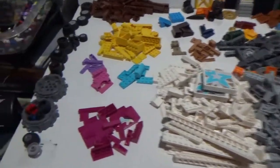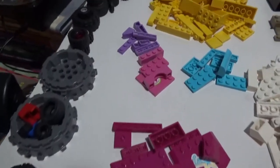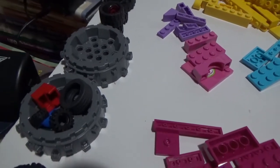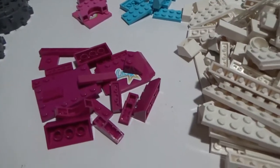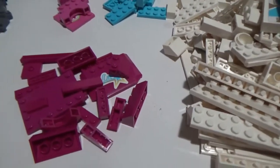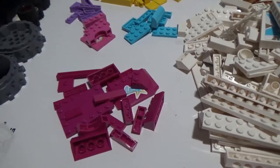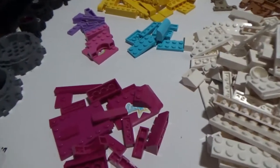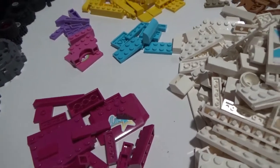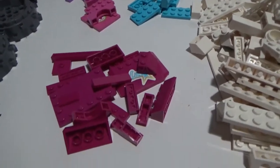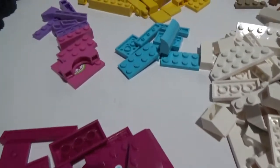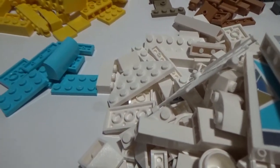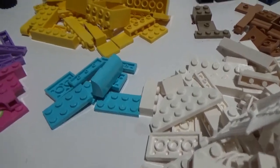Alright, we pretty much have everything sorted out by color. Let's take a look at what we got - several wheels, different types from about eight different sets. Here's some Friends colors: dark purple, dark pink, dark lavender, and I think that is medium azure. Some yellow, medium blue I believe, light blue, regular blue.